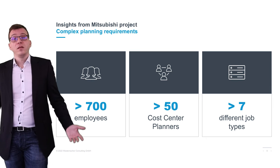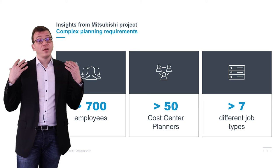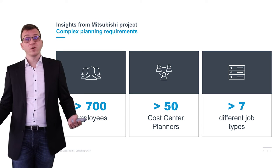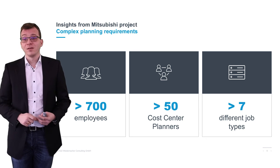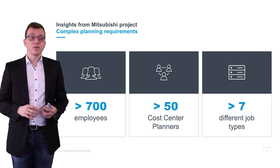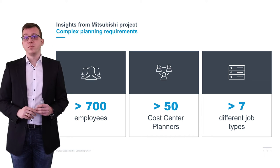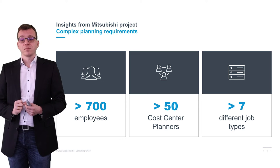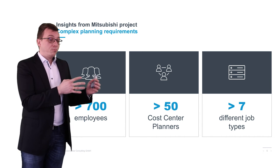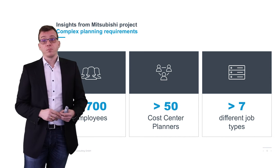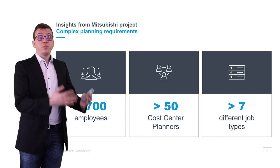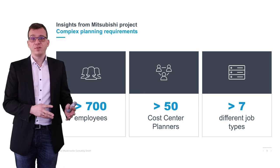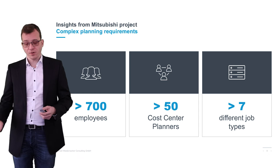They also have had, and still have, a very complex planning process: more than 700 employees, more than 50 cost centers. And what makes it very special is you have more than seven different job types. So it's not just planning headcount and FTE and then you're done — that would be far too easy. You can plan part-time employees, people on maternity or paternity leave, students, and people that came back from retirement and still continue working. Just planning headcount and FTE is a simplified version of what is actually going on in many companies.